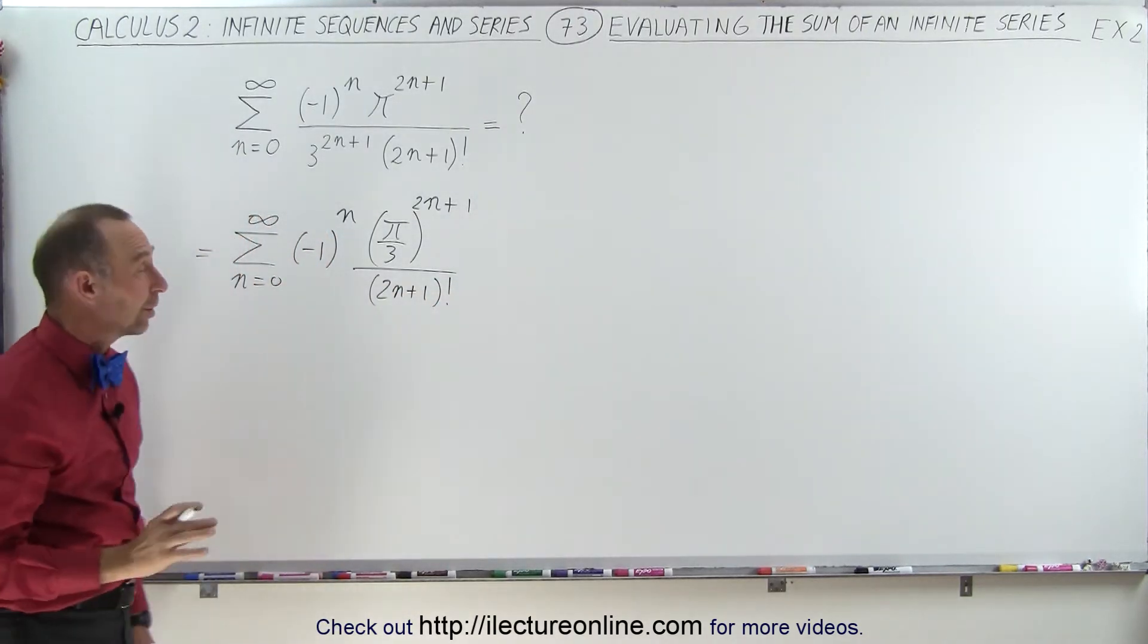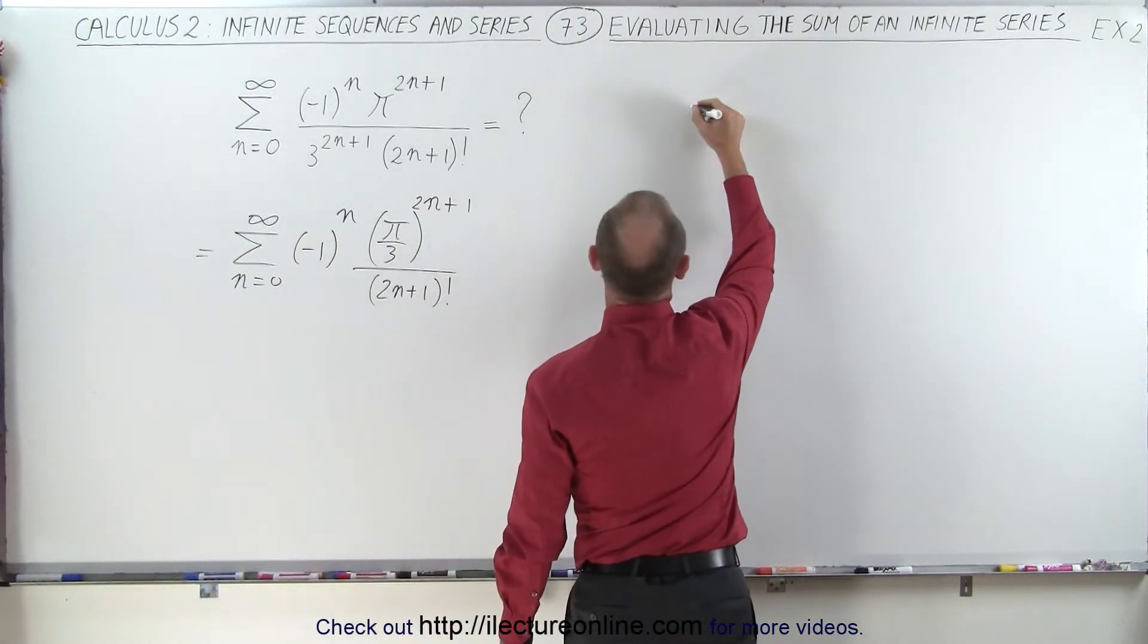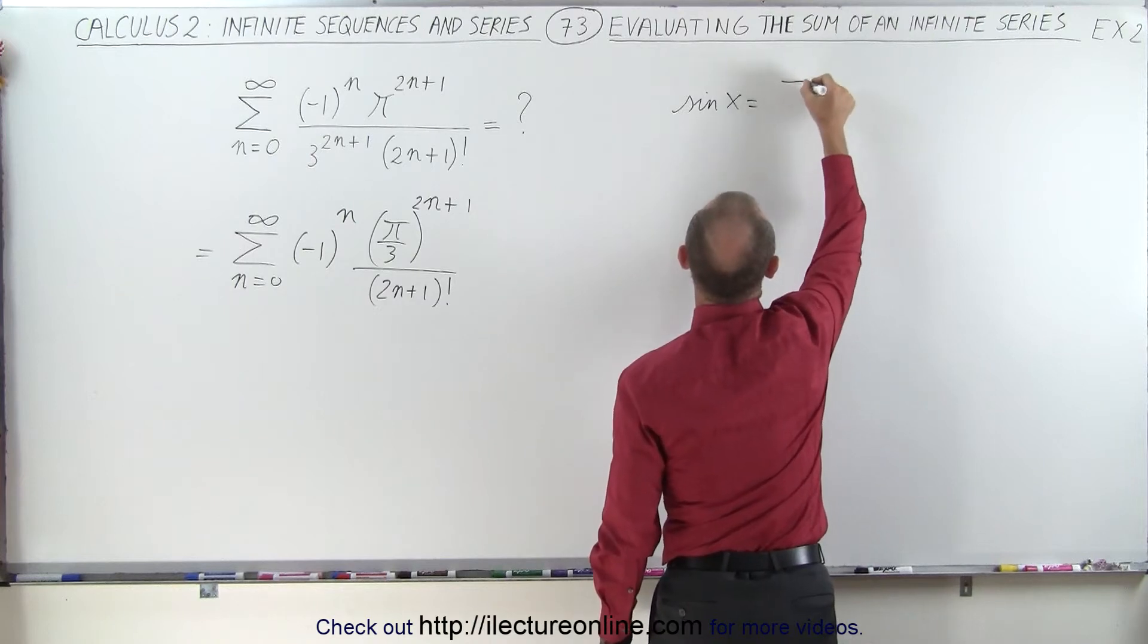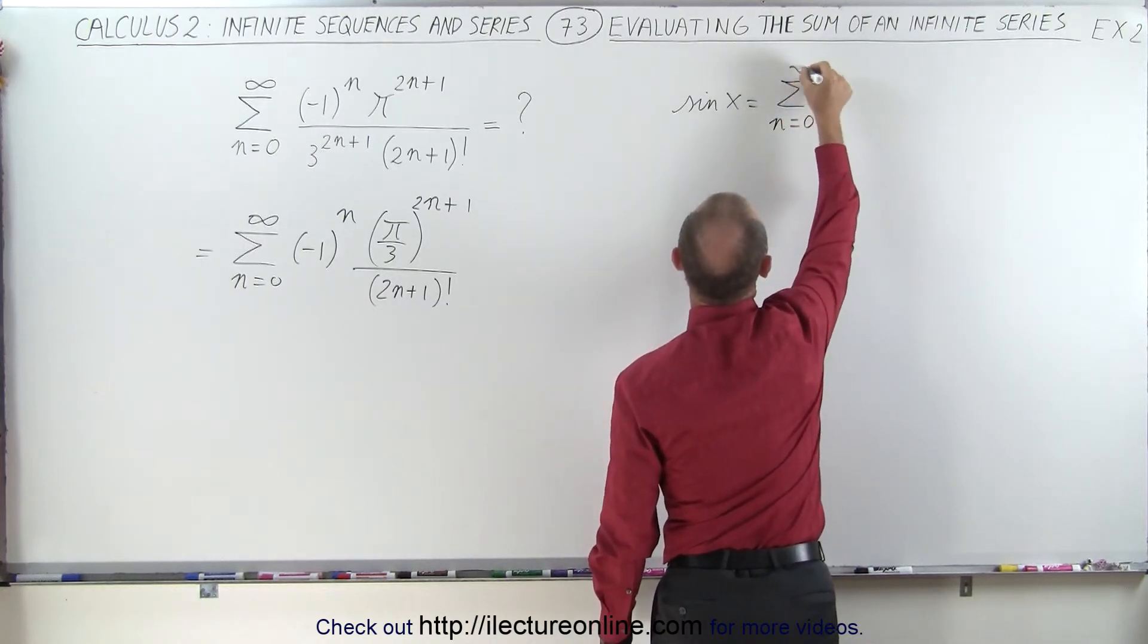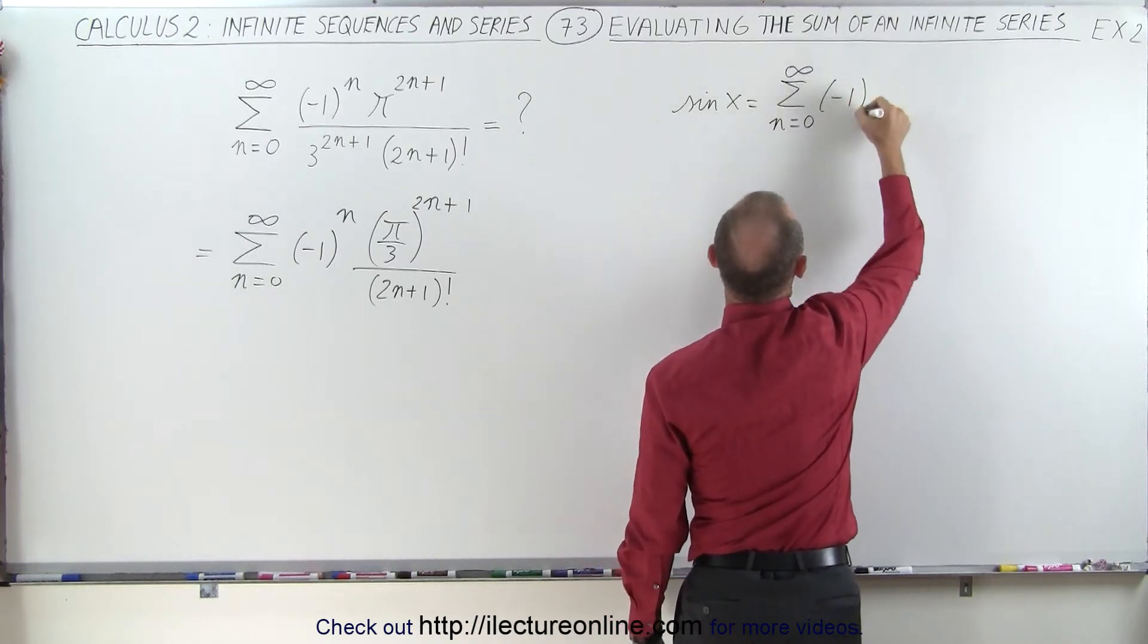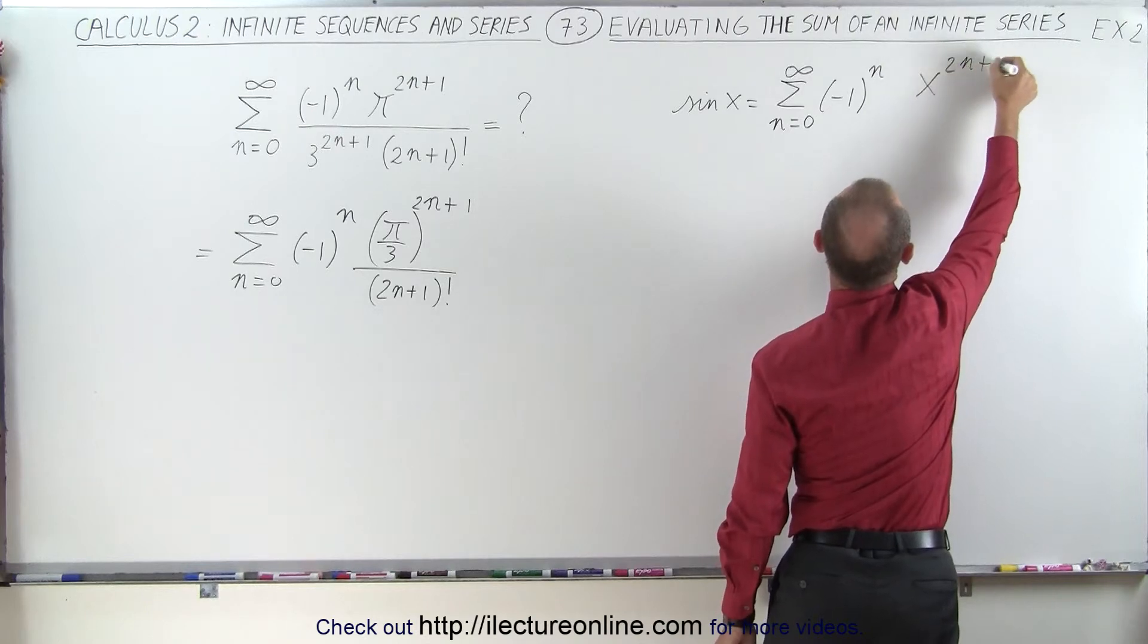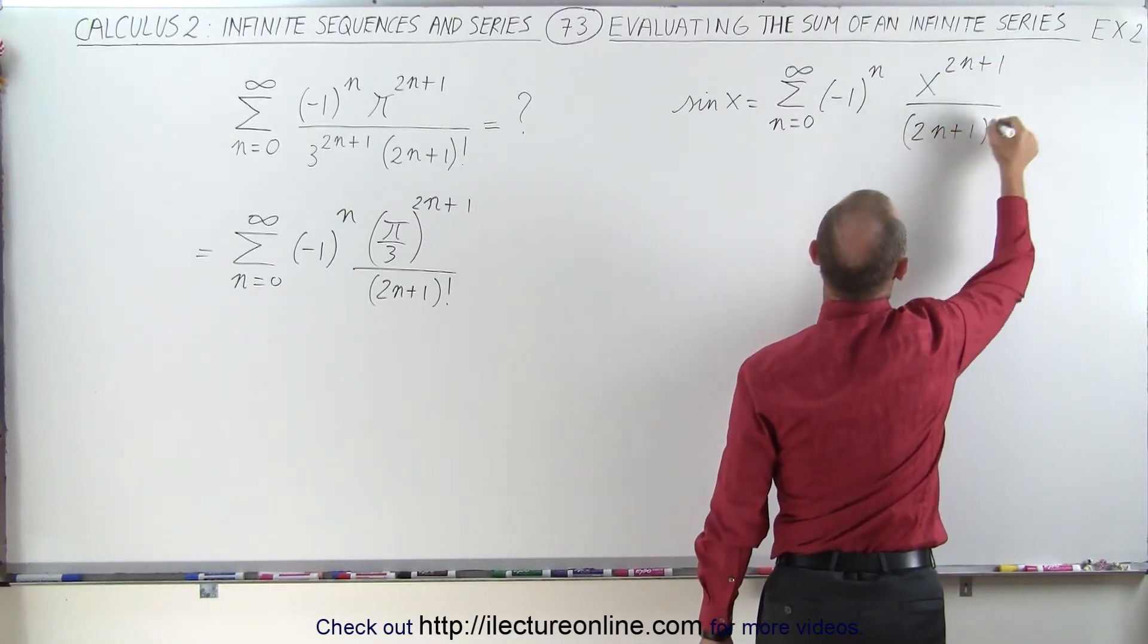Now that's beginning to look a lot like something we should recognize because the Maclaurin series for the sine of x is equal to the infinite sum from n equals 0 to infinity of minus 1 to the n power times x to the 2n plus 1 divided by 2n plus 1 factorial.